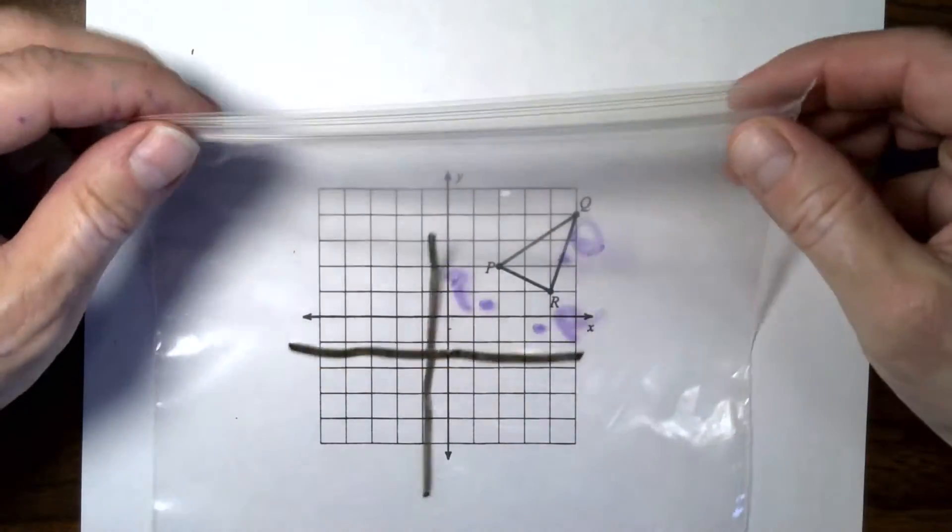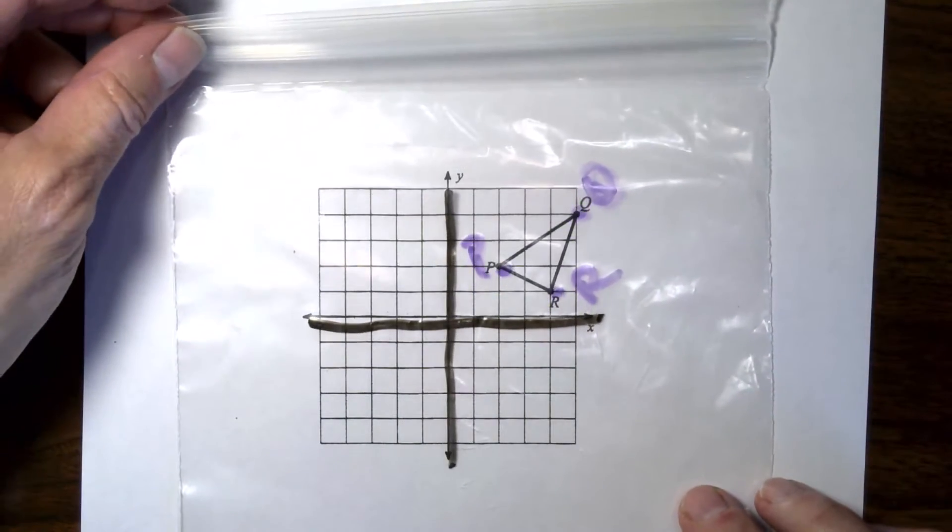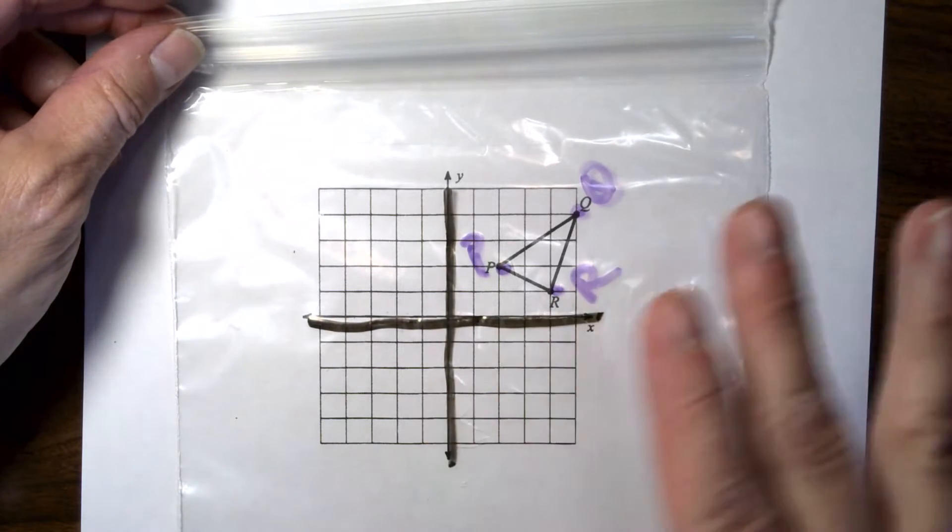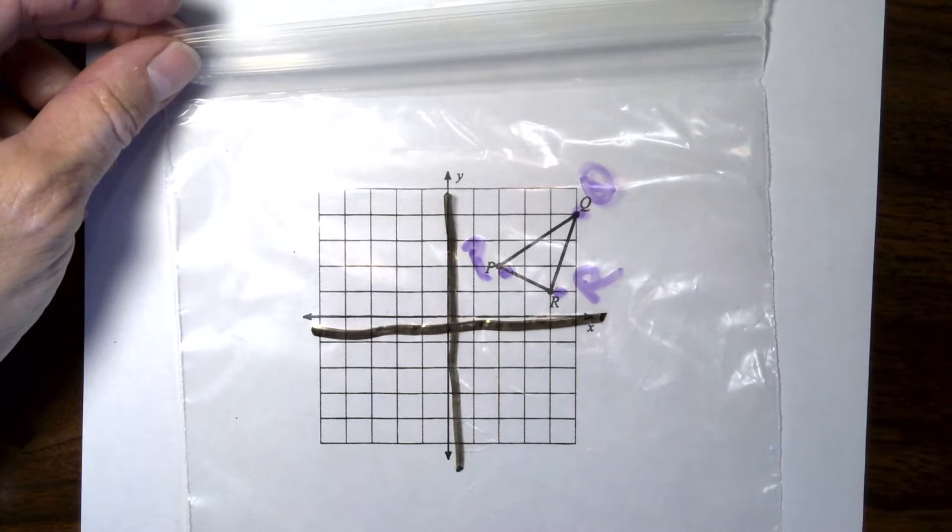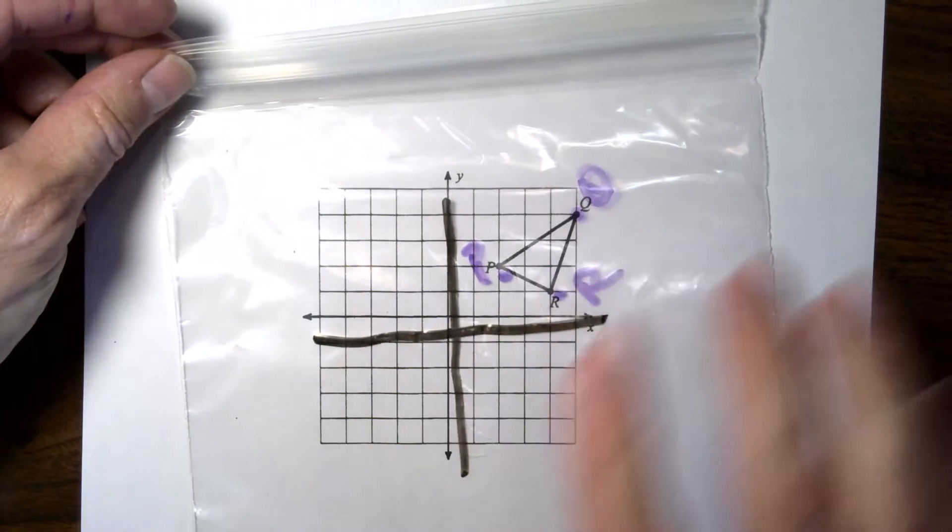One would be just to use a clear baggie. Works really well with dry erase markers and then the kids can just erase it. So if you're a student, you can also use this, but you will need dry erase markers if you're going to erase it.